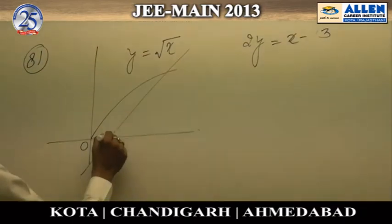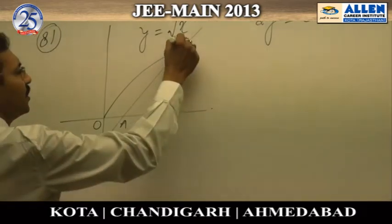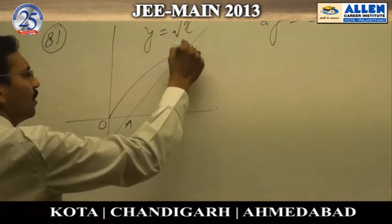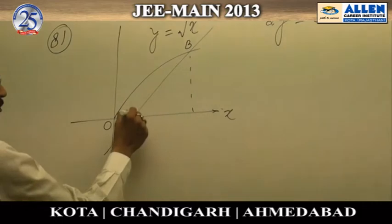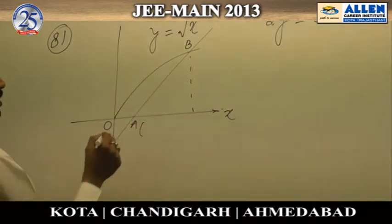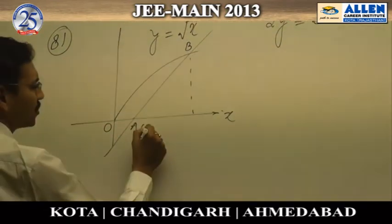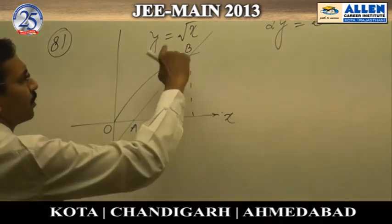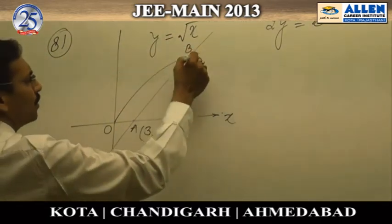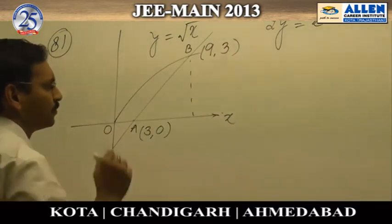This is the origin. We label points A and B, and draw a perpendicular to the x-axis. We calculate point A by substituting y equals 0, giving us A as (3, 0). By solving the two curves together, we get point B as (9, 3).